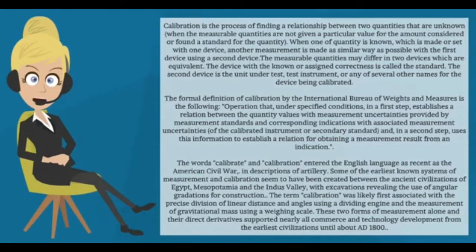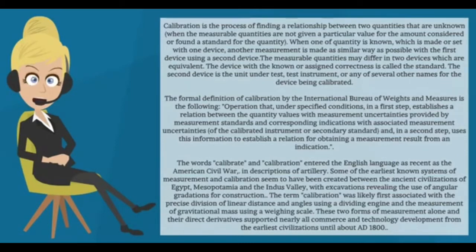Calibration is the process of finding a relationship between two quantities that are unknown when the measurable quantities are not given a particular value considered or found as standard. When one quantity is known, which is made or set with one device, another measurement is made in a similar way as possible with the first device using a second device. The measurable quantities may differ in two devices which are equivalent. The device with the known or assigned correctness is called the standard.